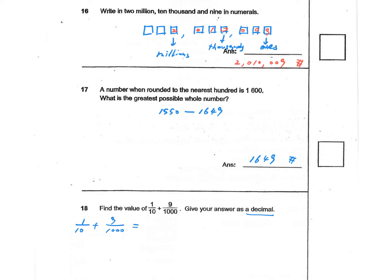For the first number, 1 over 10, I'm going to multiply 100 to both the numerator and the denominator. That gives us 100 divided by 1,000 plus 9 over 1,000. Adding them together, we get 109 divided by 1,000. We need to convert this to a decimal, so that's going to be 0.109 — we move the dot 3 positions. So our answer is 0.109.